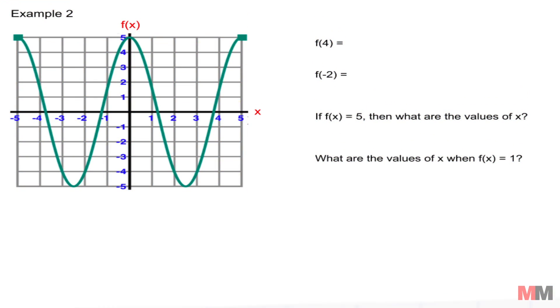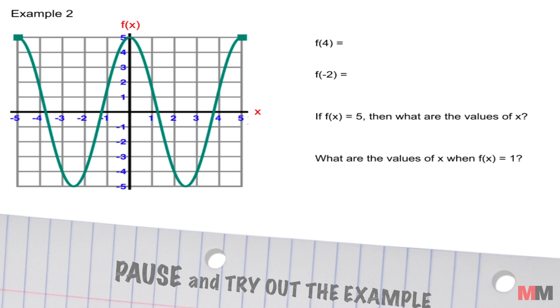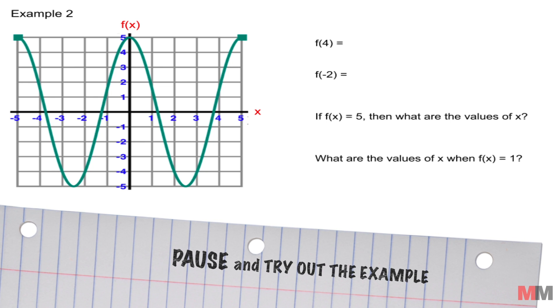And scan for that point to see where it's at on the x axis and that is negative 3. I want you to try example 2. If you get confused, you can always look at example 1. Try out these four questions and pause the video. Write it down on a piece of paper. When you are done, unpause the video and we'll go over the answers.